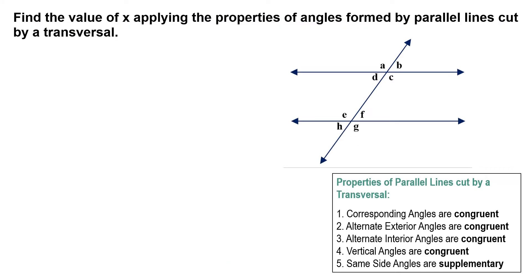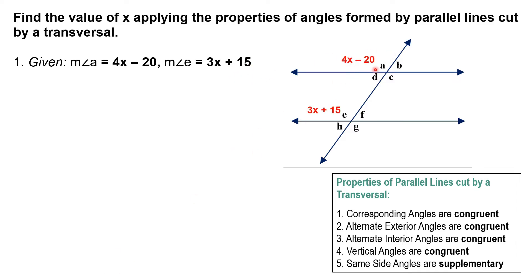Let's start with our first example. Given that angle A equals 4x minus 20 and angle E equals 3x plus 15, we can see them in the figure. To solve for x, we first need to identify the relationship between angle A and angle E — whether they are corresponding, alternate, or vertical angles, which would make them congruent.